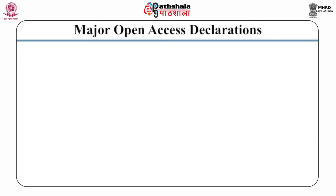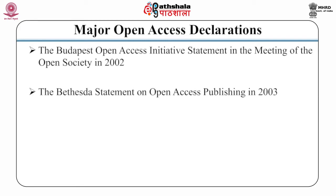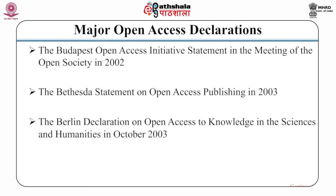There are three major international statements made on open access. Number 1: the Budapest Open Access Initiative statement, in the meeting of the Open Society in 2002. Number 2: the Bethesda Statement on Open Access Publishing in 2003. Number 3: the Berlin Declaration on Open Access to Knowledge in the Sciences and Humanities in October 2003.